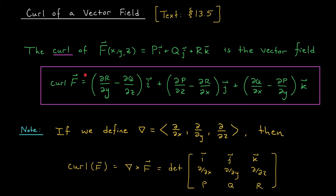The curl of the function is given by this vector field. We take the partial of r with respect to y minus the partial of q with respect to z, times i-hat — that's the first entry. Then partial p by partial z minus partial r by partial x, times j-hat — that's the second entry. And finally, partial q by partial x minus partial p by partial y, times k-hat — that's the third entry.